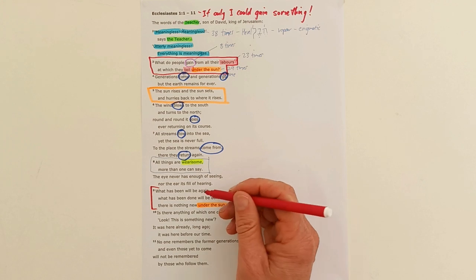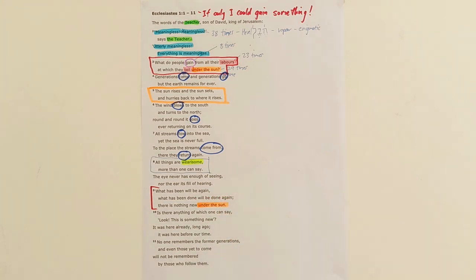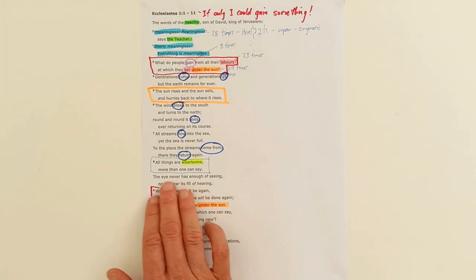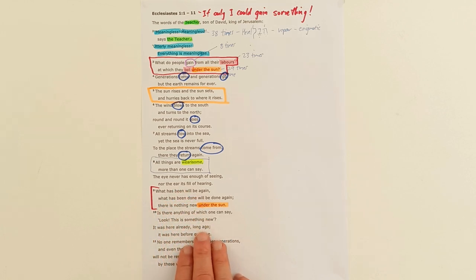All things are wearisome, more than we can say. What has been will be again, what has been done will be done again. There's nothing new under the sun. What do people gain from their toil under the sun? There's nothing new, it just continues on and on and on, this repetitive nature of life under the sun. What's the point? Is there anything which one can say it's new? Well no, it's just new ways of looking at the world. There's ultimately nothing new under the sun.